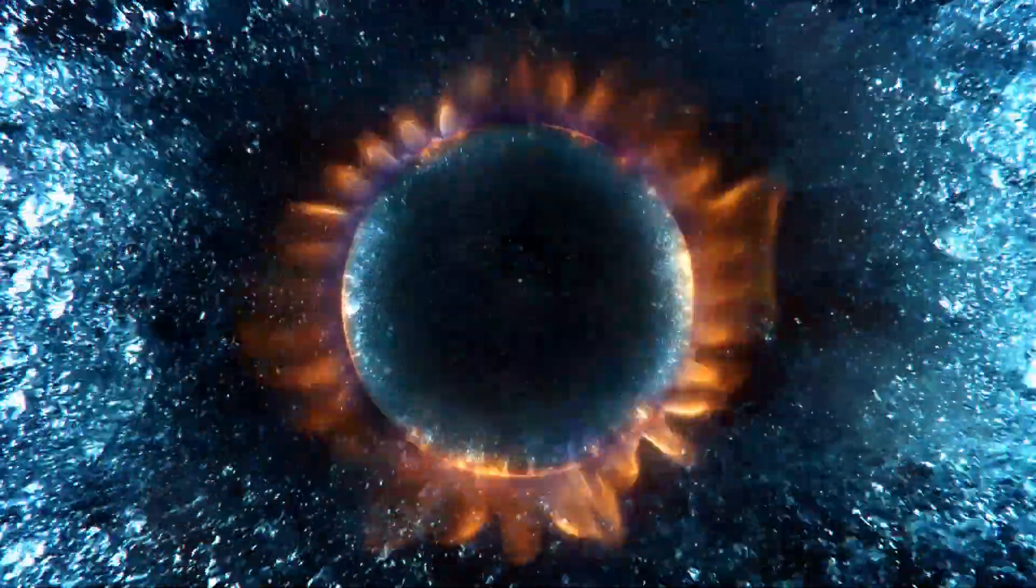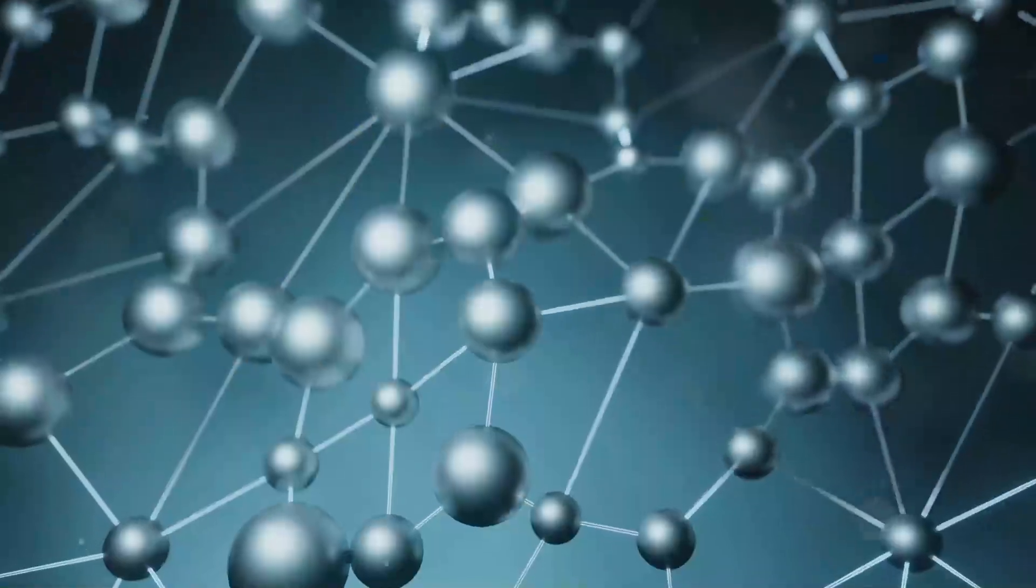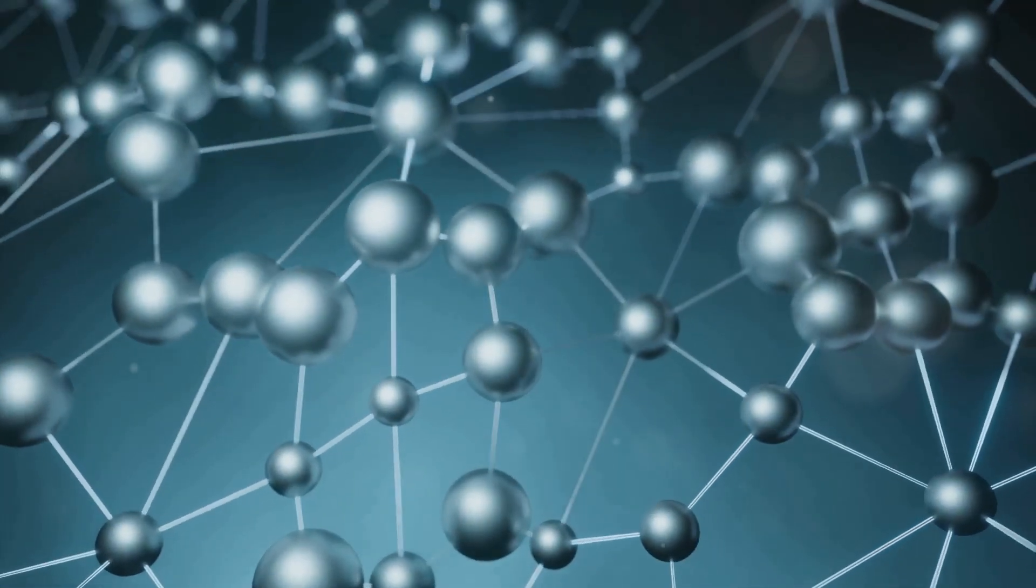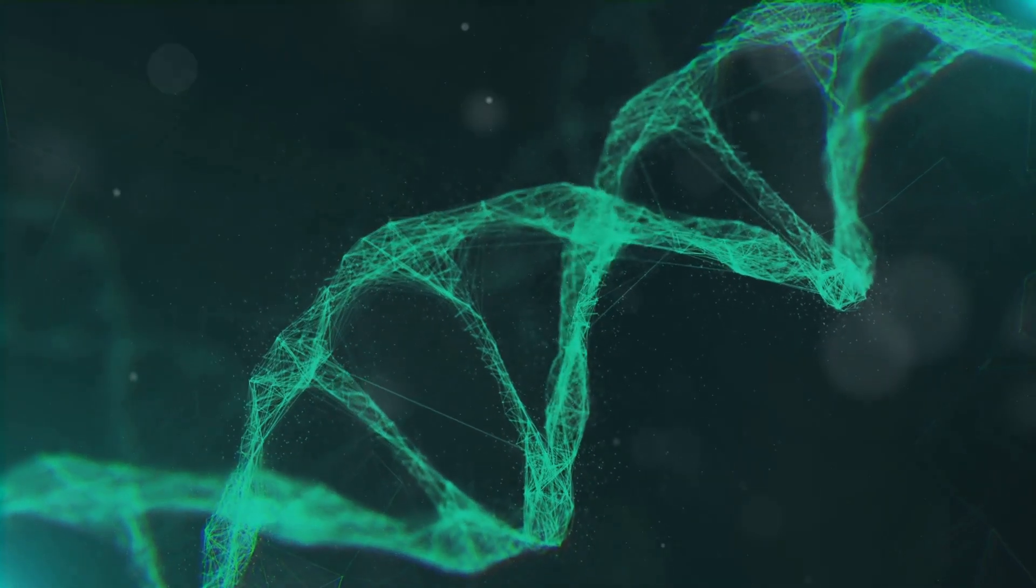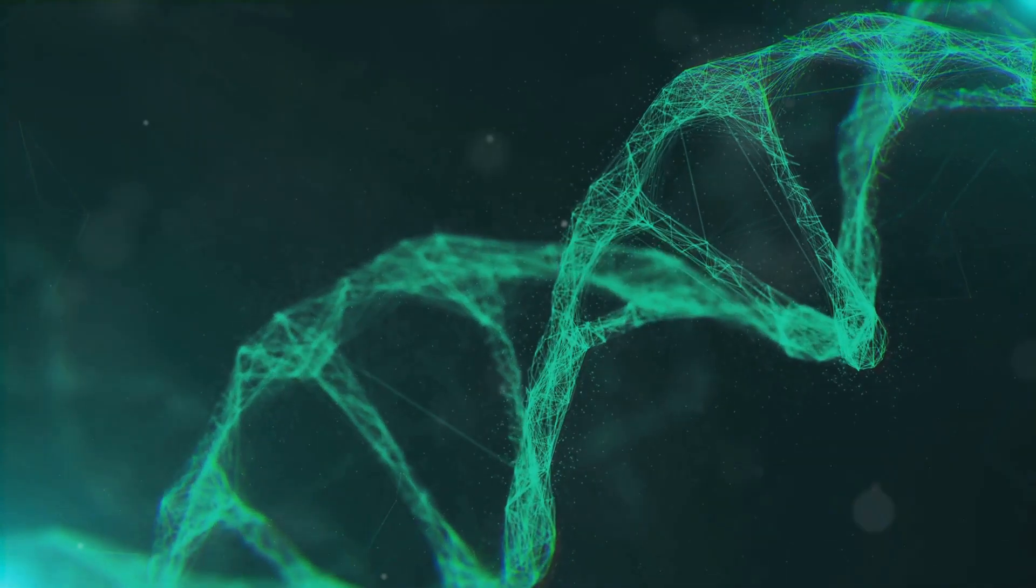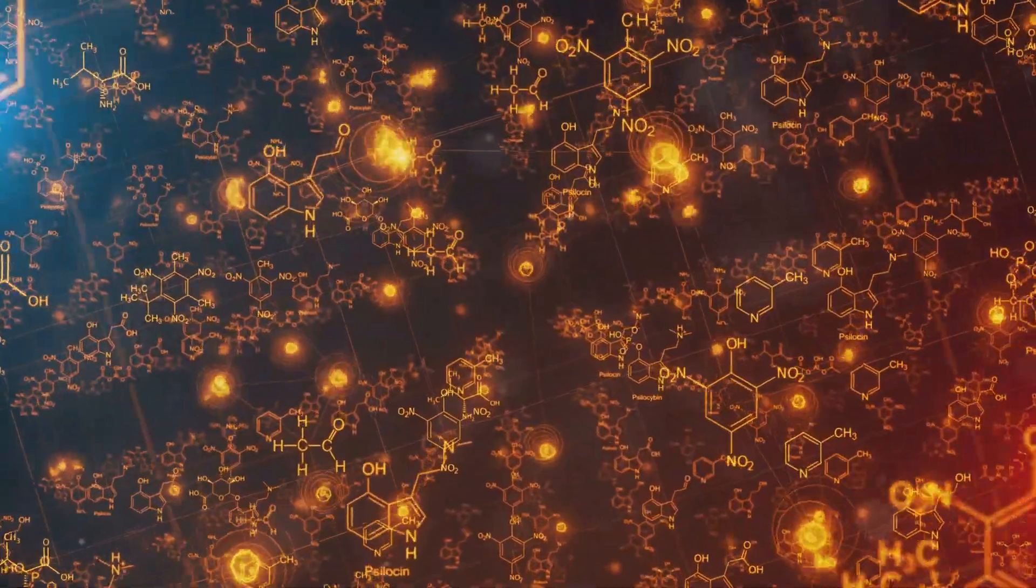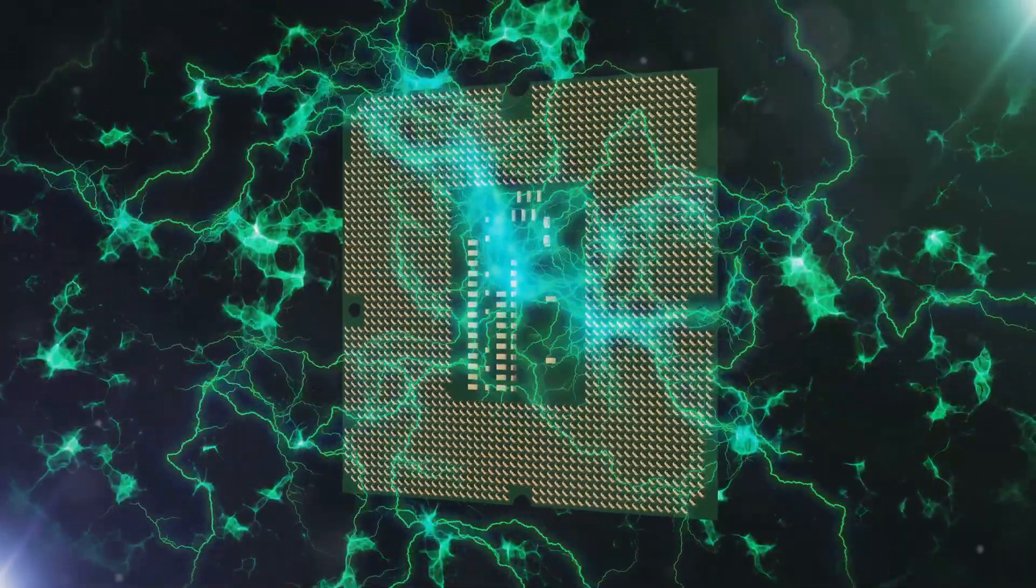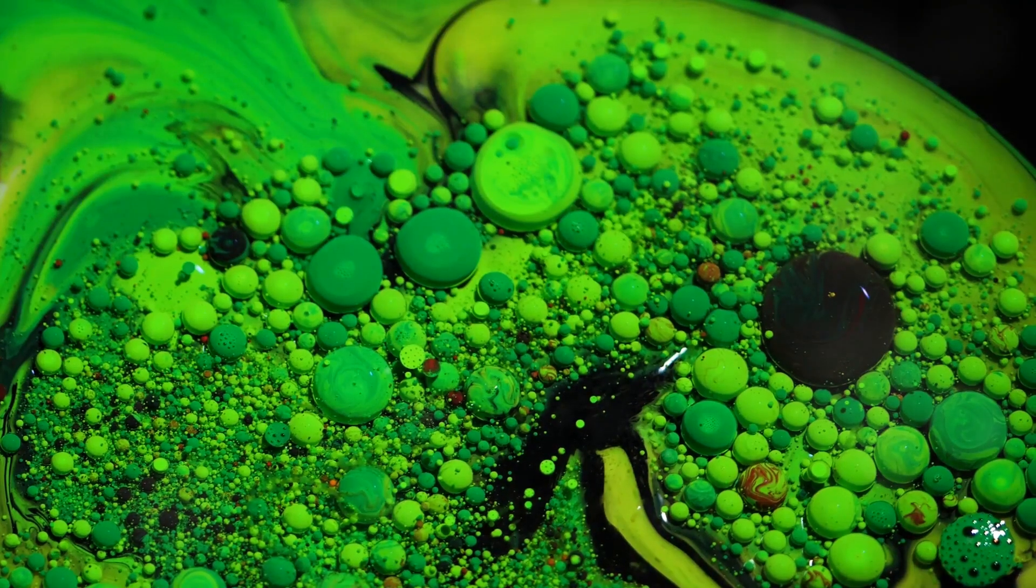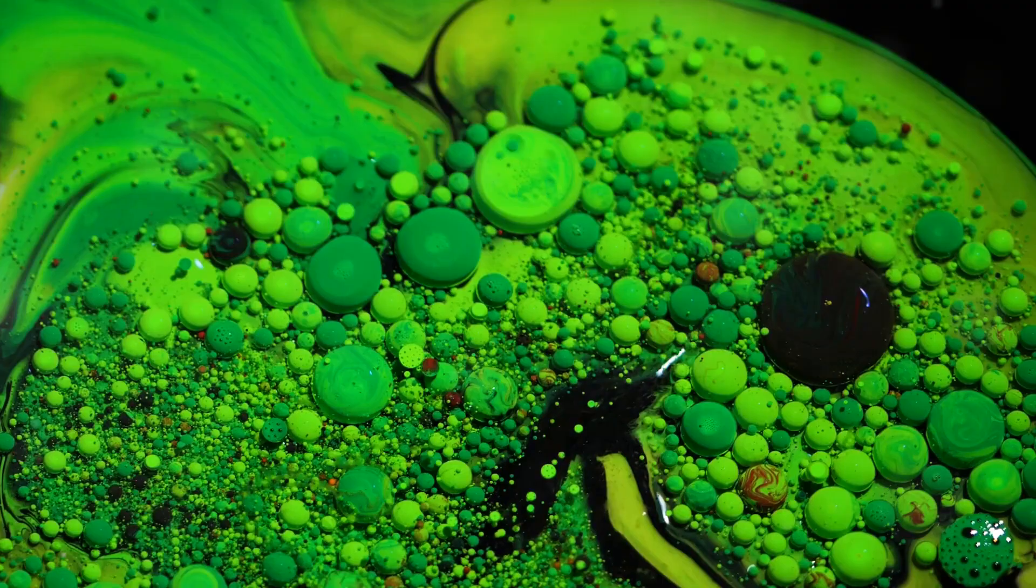In a microfluidic fuel cell, the key players in this electron exchange are the fuel and the oxidant. Think of the fuel as the electron donor. It's got extra electrons to spare. The oxidant, on the other hand, is the electron acceptor. It's eager to grab those electrons. But here's the catch. Electrons don't just jump willy-nilly between molecules. They need a specific pathway, a sort of electron highway to travel along. And that's where the microchannels come in. They provide the perfect conduit for this electrifying journey.